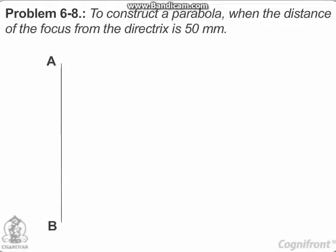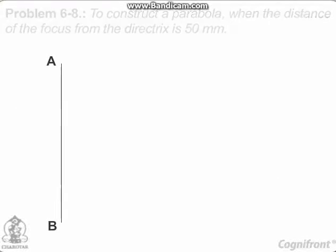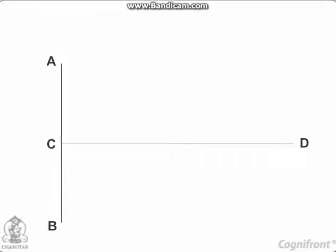Draw the directrix AB and the axis CD. Mark focus F on CD 50 mm from C. Bisect CF in V, the vertex, because eccentricity equals 1.